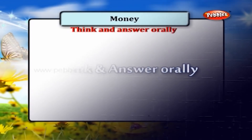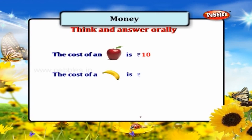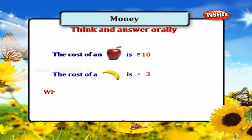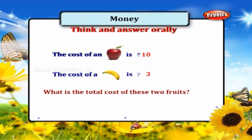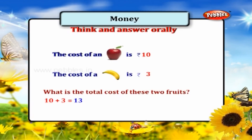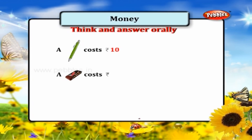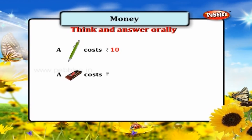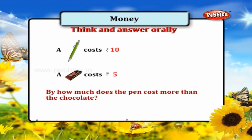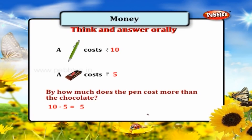Think and answer orally. The cost of an apple is rupees 10. The cost of a banana is rupees 3. What is the total cost of these two fruits? 10 plus 3 is equal to 13 rupees. A pen costs rupees 10 and a chocolate costs rupees 5. By how much does the pen cost more than the chocolate? 10 minus 5 is equal to 5 rupees.